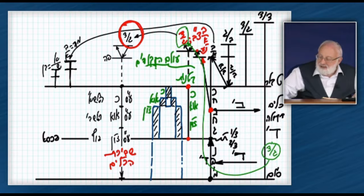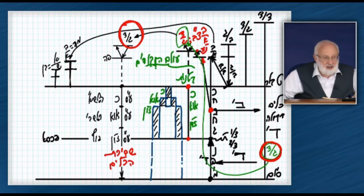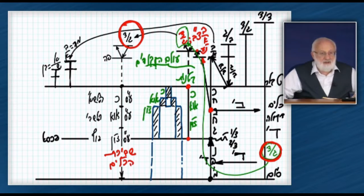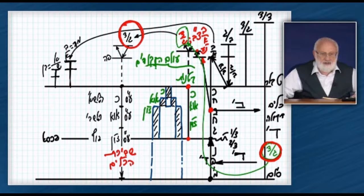This is Dalet Gimel from the Hei Deak, right? And it doesn't do a Zivug Deakha on the Reshimo of Dalet Gimel, because on the Reshimo of Dalet Gimel, there has to be Ab.